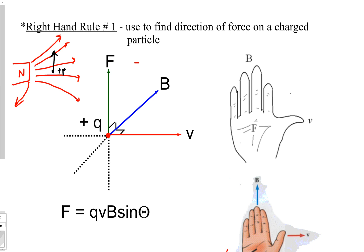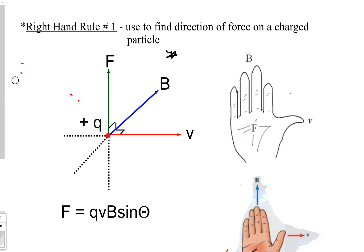The purpose of the right hand rule is to tell you the direction of that force. This might be hard to explain via video. In calculus-based physics this is described as a cross product — the force is the cross product of the velocity vector and the magnetic field vector B. Since this is not a calculus video, I'll leave terms like 'orthogonal vector' out for now.